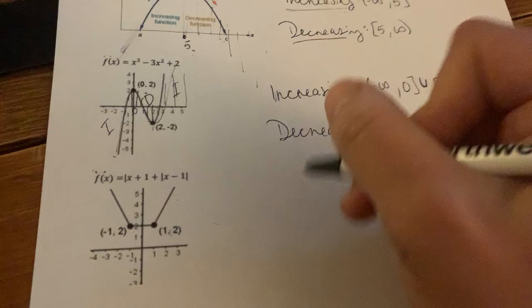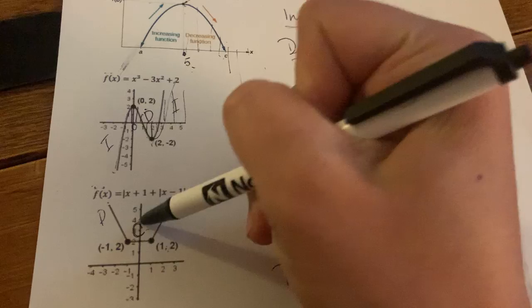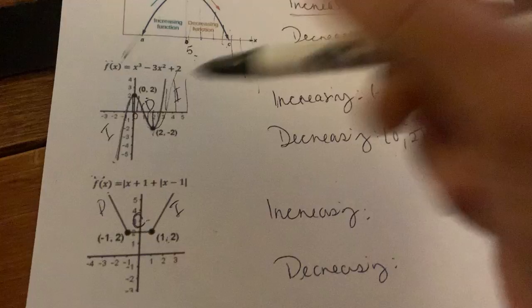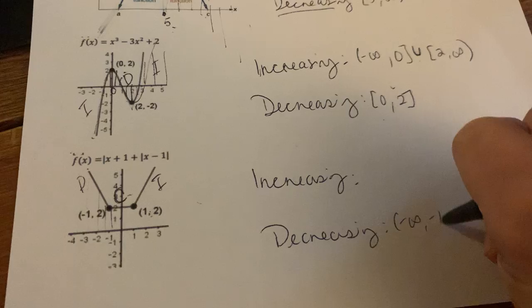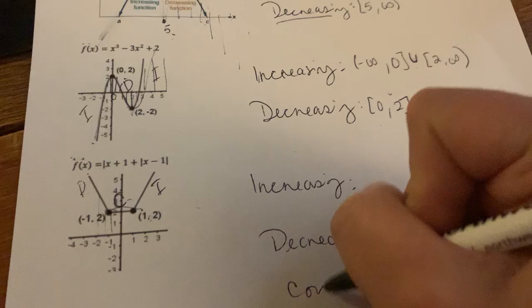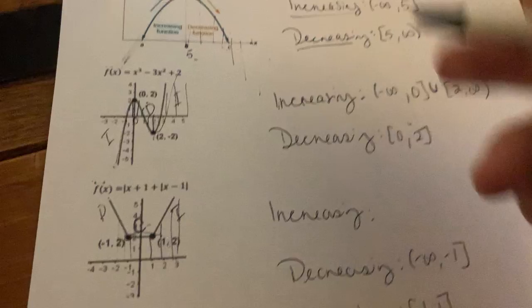Here, increasing. So actually, from left to right, you're decreasing, but here you're constant, and then you're increasing. That's fine. So from left to right, if you go over here, from negative infinity all the way to negative one, you're decreasing. And then from negative one, all the way to one, you're in a constant state. And then from one onward, you're increasing. And that's it. Let's go.